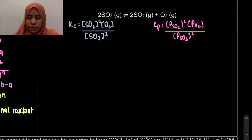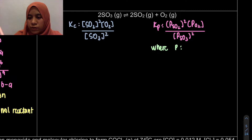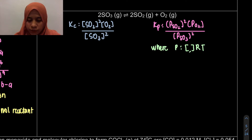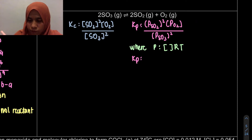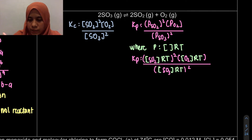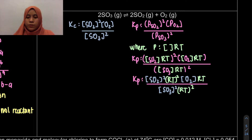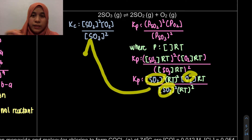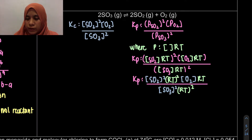For a specific reaction, we substitute the pressure terms one by one. Remember that pressure equals concentration times RT. We include all gaseous species and substitute into Kp. Then we expand — for our SO2, O2, and SO3 reaction, the RT terms combine: the exponents are 2 plus 1 minus 2, giving RT to the power of 1.